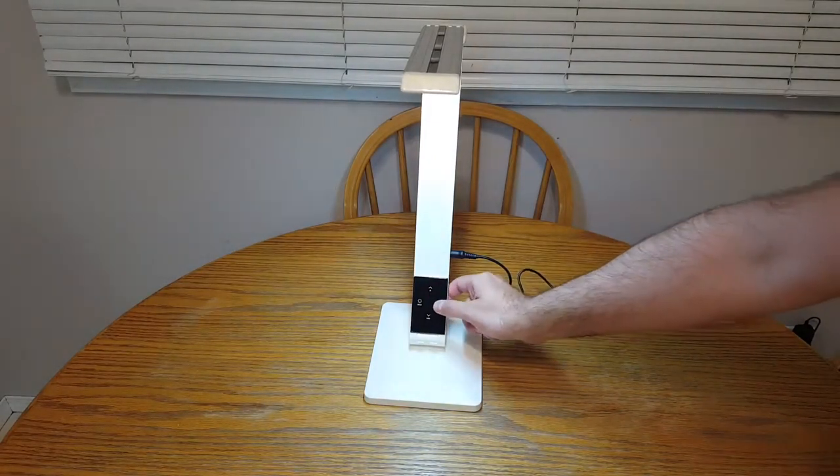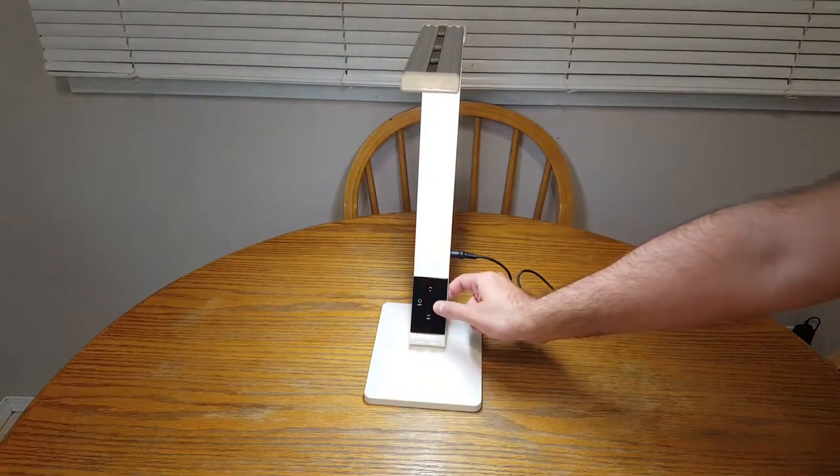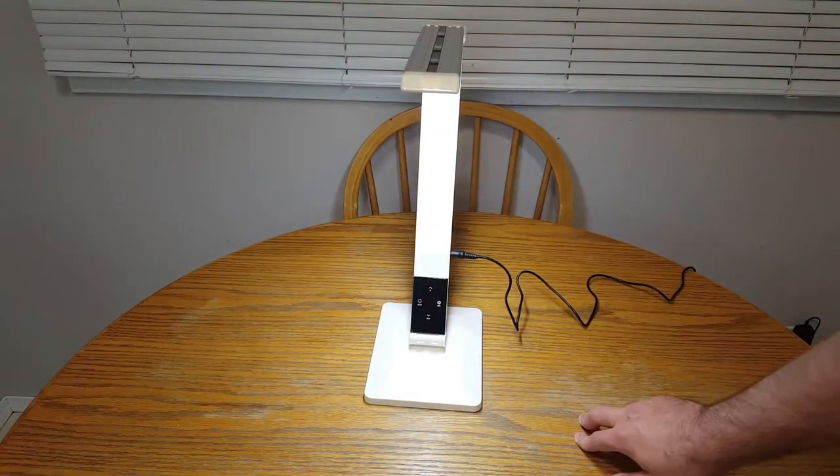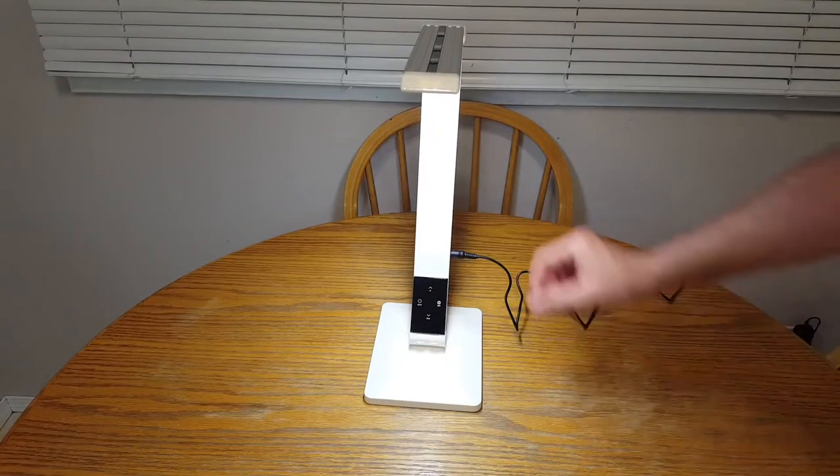So you have white light, yellow light, and combined. Your combined light is the brightest as it uses both of them, whereas the other ones just have the single colors.